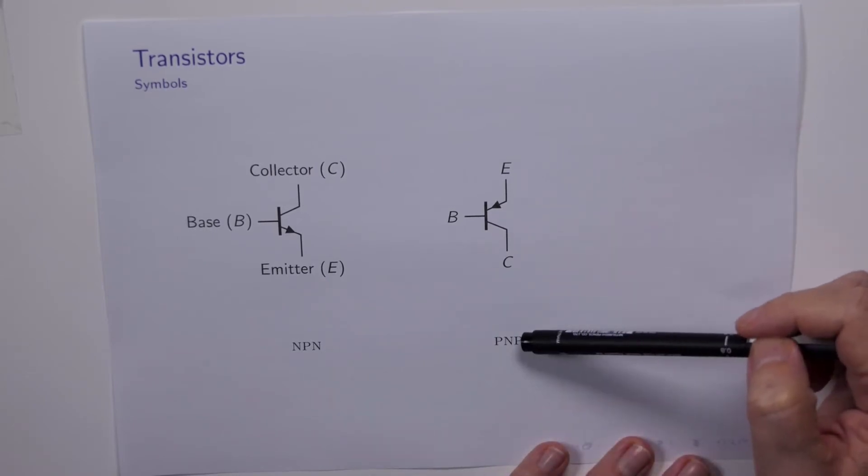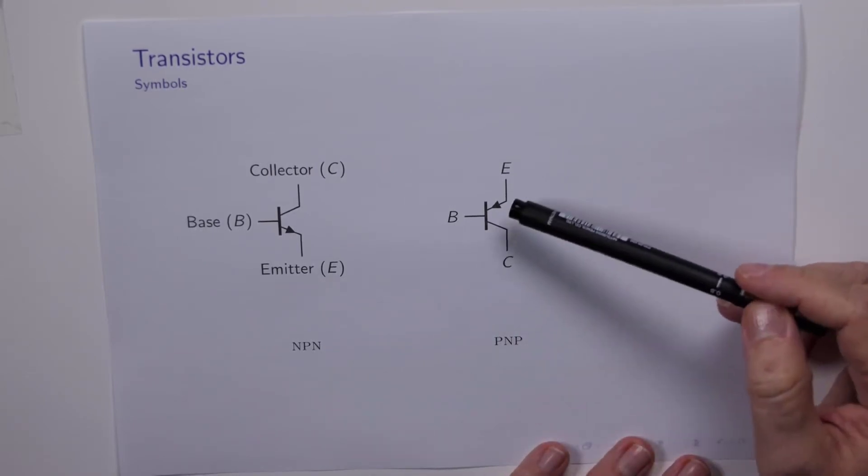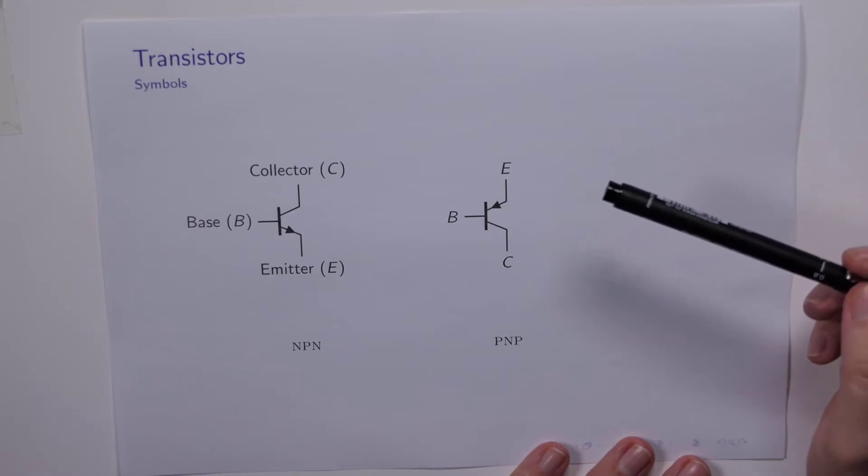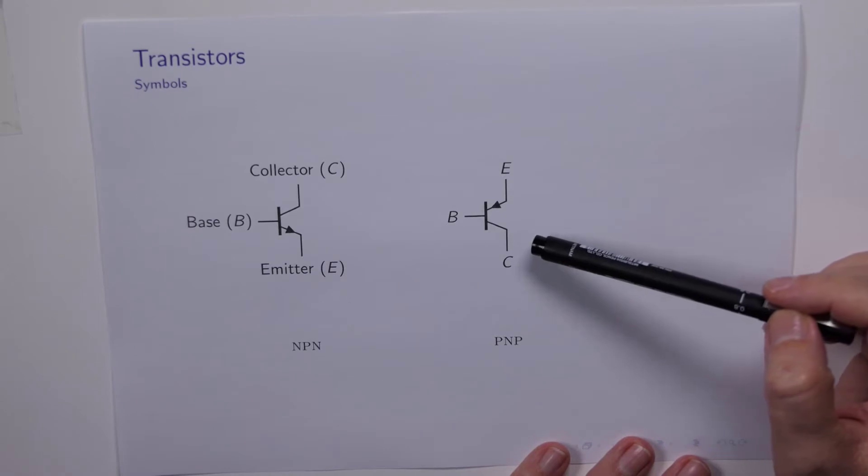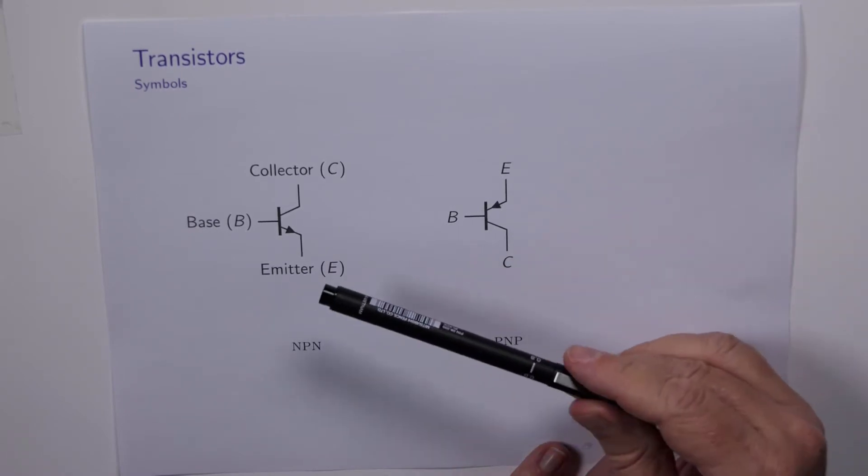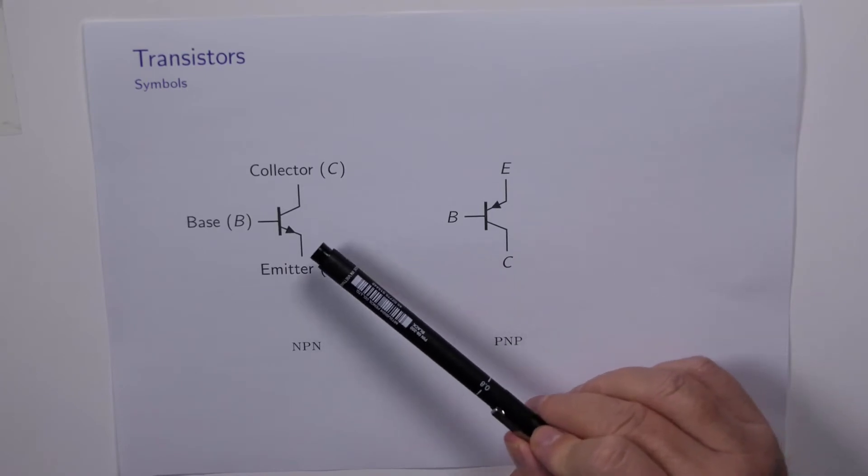These labels refer to how the devices are manufactured internally, and we basically won't pay any attention to the PNP transistor. The PNP is important, but at the moment we want to keep life simple and we will concentrate on just this one device.